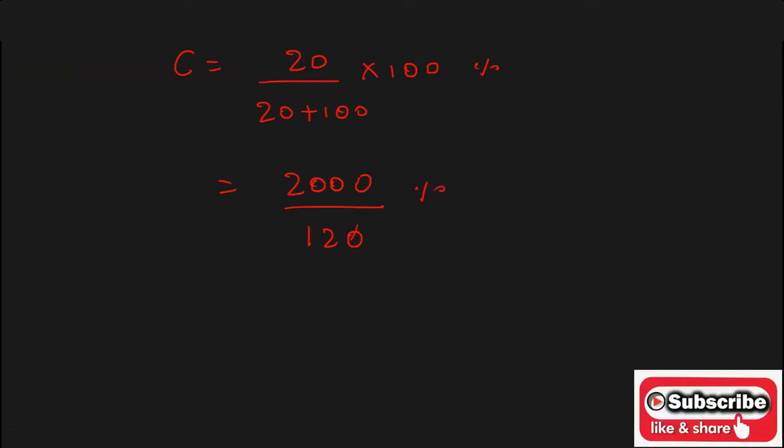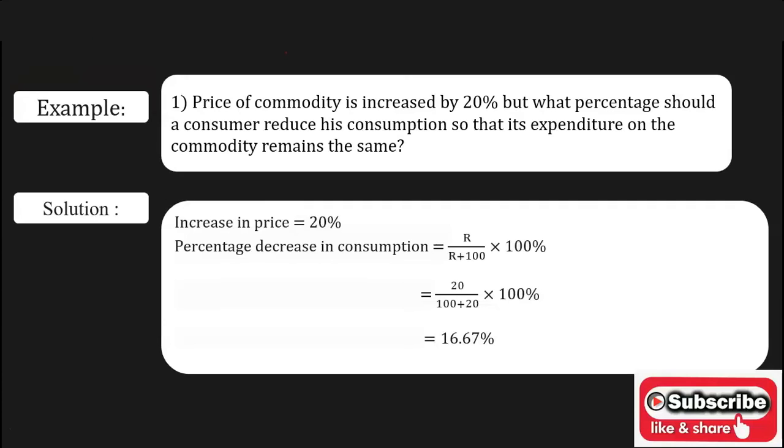Then zeros are cancelled. This is 50 upon 3 percent, which can also be written as 16 and 2/3 percent, which is nothing but 16.67 percent.